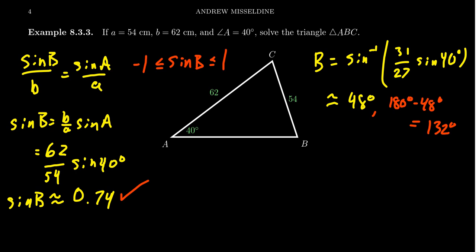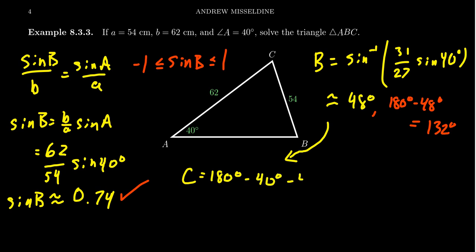Let's consider the first possibility where B equals 48 degrees. Since A is 40 degrees and B is 48 degrees, angle C equals 180° − 40° − 48°, which gives us C equal to 92 degrees.